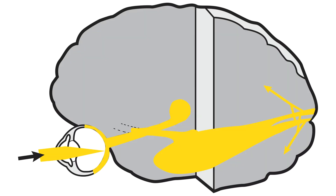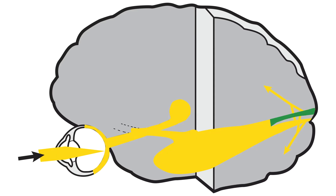When the optic radiations reach the posterior end of the lateral ventricle, called the atrium, they split into upper and lower forks. The upper fork, carrying visual signals from the lower quadrant of the visual field, enters the superior visual cortex.